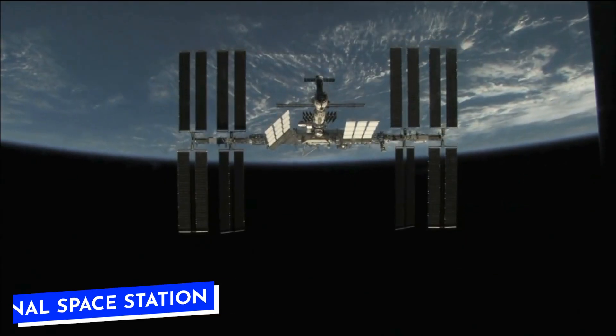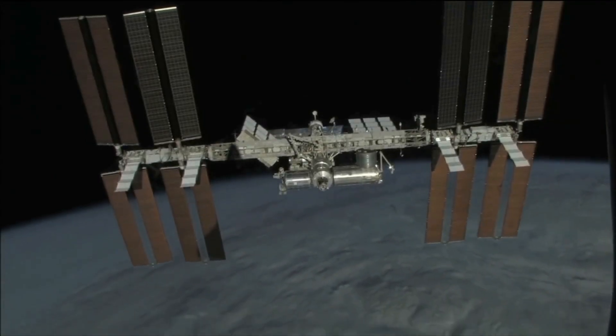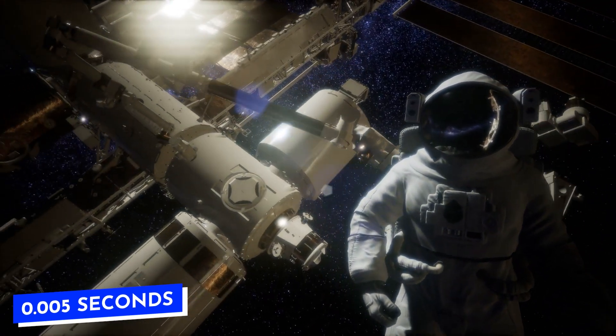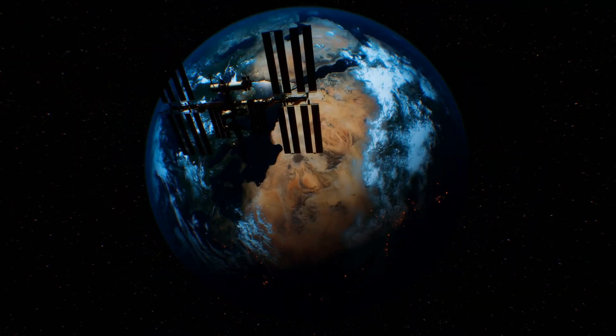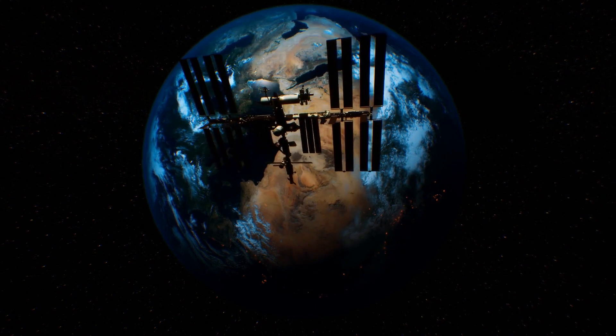Astronauts on the International Space Station experience this too. Orbiting Earth quickly, they age a bit slower than us down here. About 0.005 seconds less over six months. It's all about how moving through space can change how you experience time.